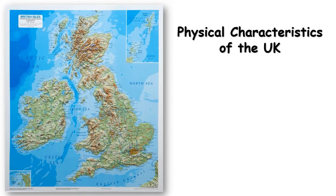Let's go into the physical characteristics of the UK. You can see here a relief map, which shows the shape of the land — where high land is and where low land is. The darker colours, the dark brown, show where mountains are. We have mountains in Scotland: the North West Highlands and the Grampian Mountains, and then the Southern Uplands. We've got mountains in England: the Pennines, the Lake District and the Peak District.